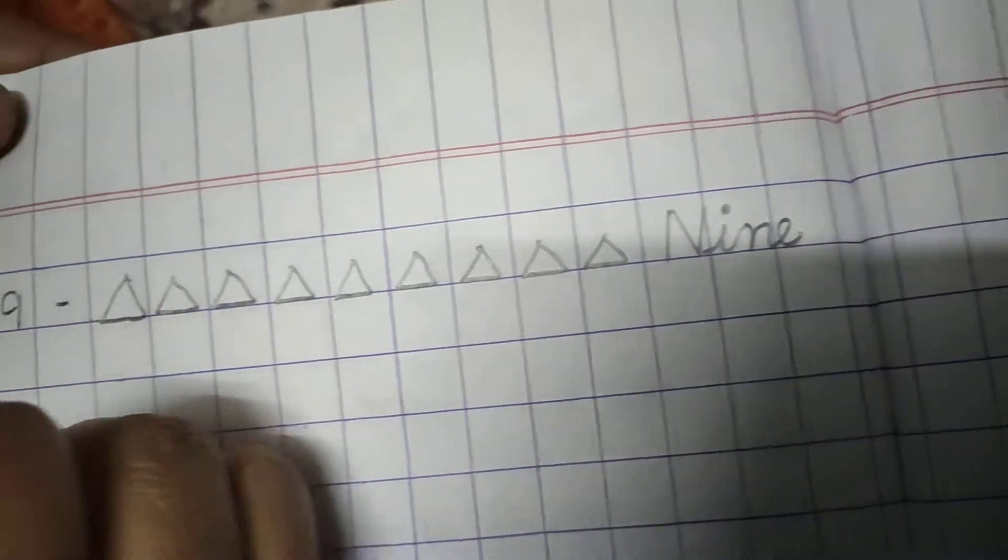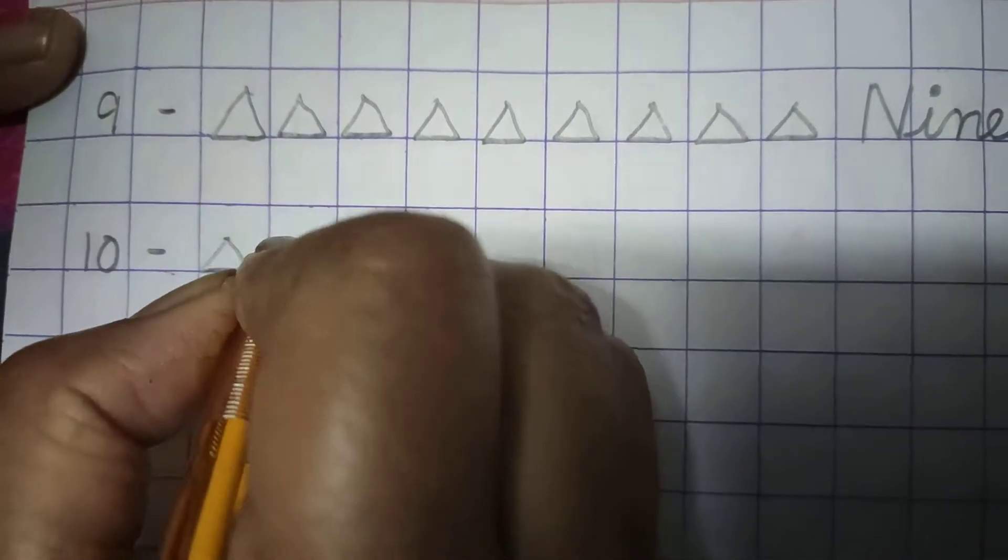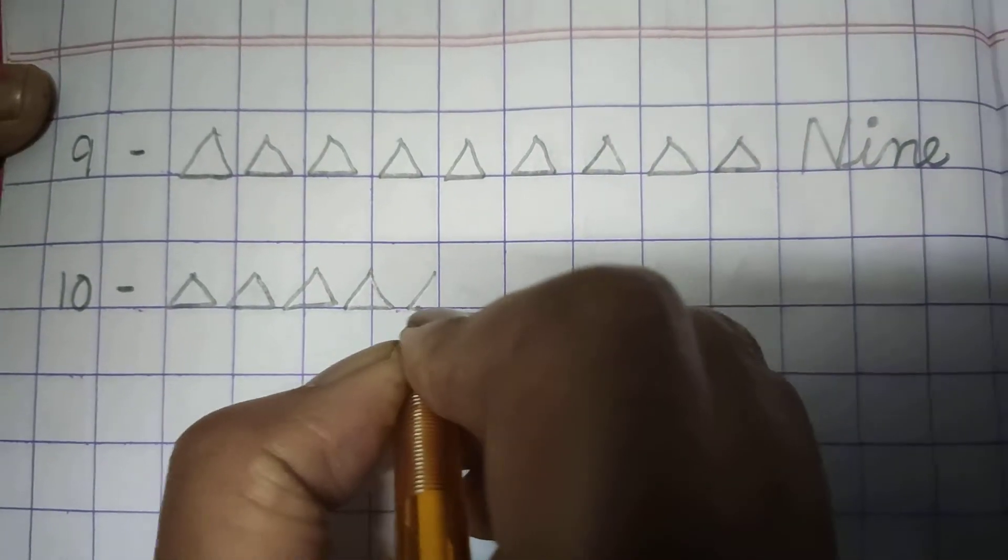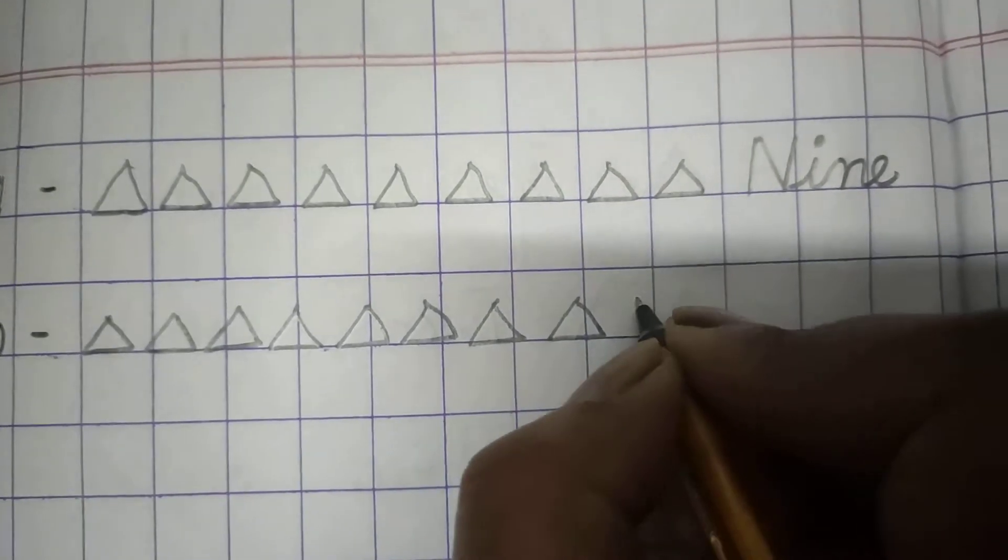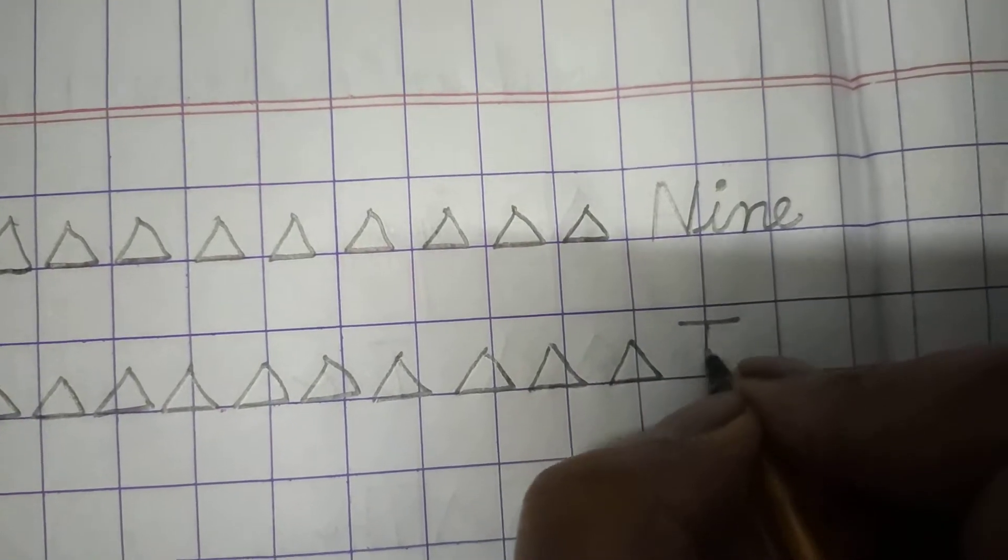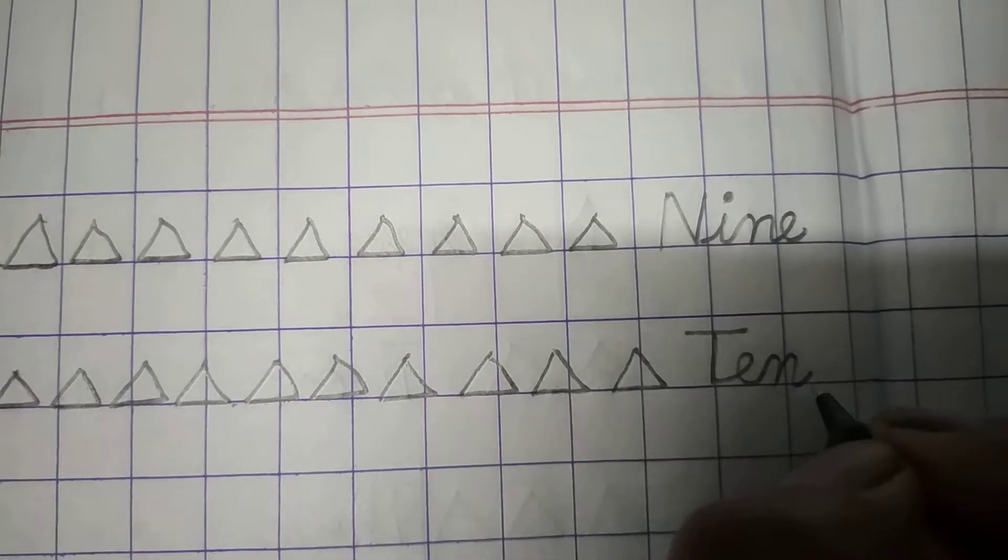And 10. Oh, 10 triangles. 1, 2, 3, 4, 5, 6, 7, 8, 9, 10. T-E-N, 10. Okay.